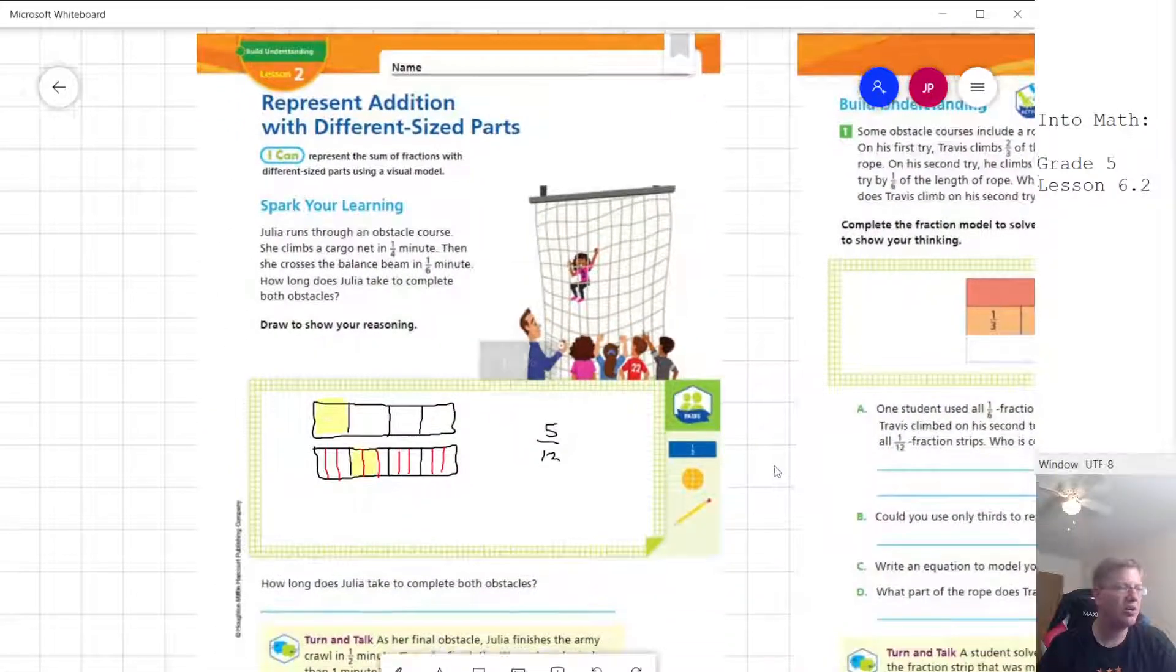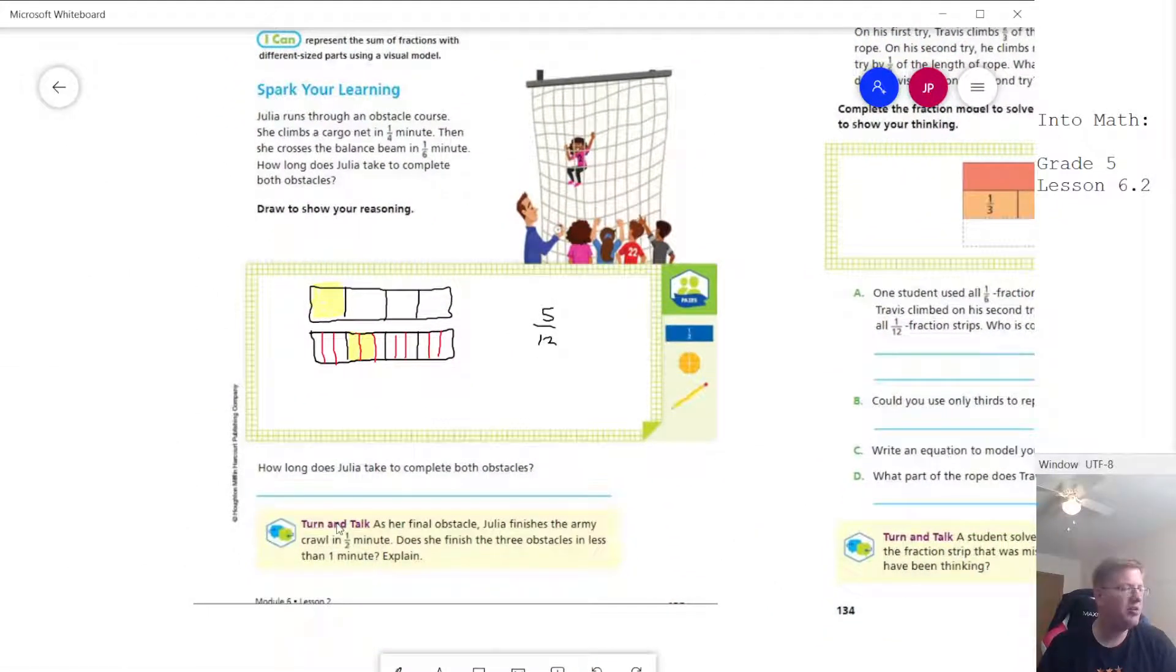And then as we work our way down the page, we do have one additional question that we would talk through in groups. So if we want to also do an additional half of a minute, we could go ahead and represent that as six additional parts. And so if we did five plus six, that would give us 11 twelfths.